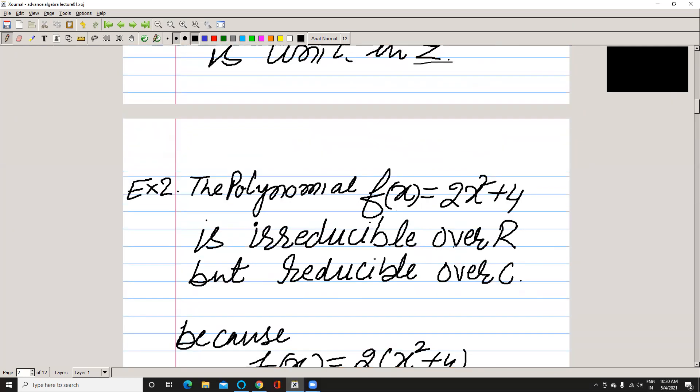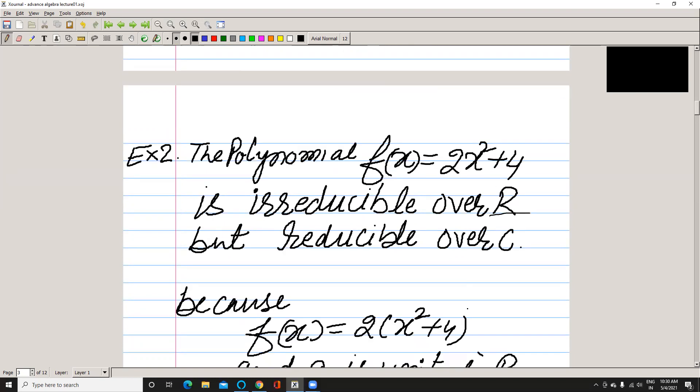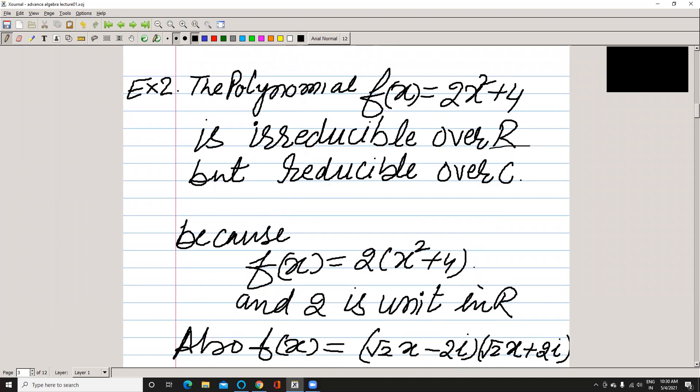Take another example, same example 2x² + 4, but it is reducible over R but reducible over C. Why? Because if we write f(x) in this way, clearly 2 is a unit in R, so it is irreducible over R.